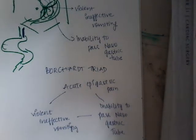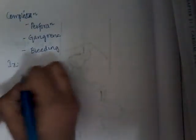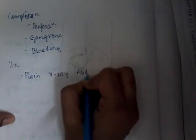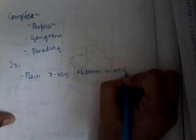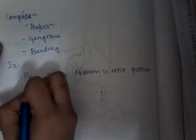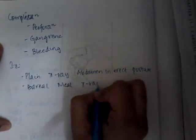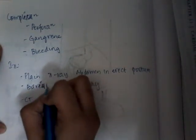The complications involved in gastric volvulus are: the volvulus may perforate, form gangrene of the stomach, or lead to bleeding. Investigations are plain X-ray abdomen in erect posture — this shows a change in the normal gas shadow of the stomach — barium meal X-ray, and CT scan.